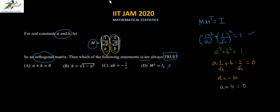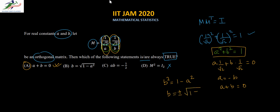Looking at the options: option A, A + B = 0 is correct. Option B is an interesting choice. We have A² + B² = 1, from which B² = 1 − A², but B will be plus or minus √(1 − A²). The option gives only the positive sign, which is not always true. So option B is not correct.